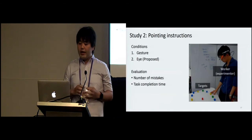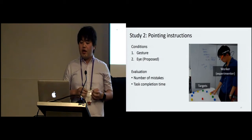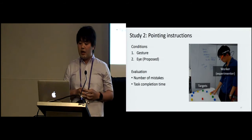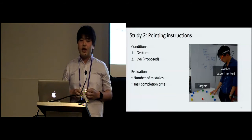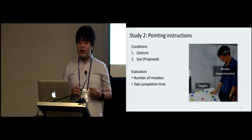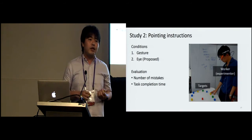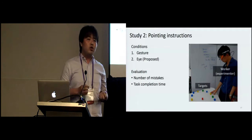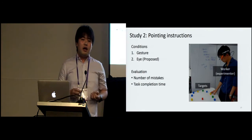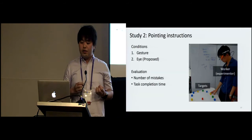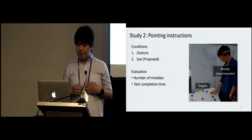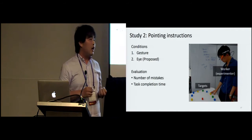The second study is an objective study to investigate pointing ability in the wearable device setting. The participants played remote collaborators and pointed out a single block to identify the object. This task was not easy because the worker could see instructions only in the narrow view field of the HMD. We compared two conditions: in the first condition, the participant used hand gesture, and in the other condition, they could use their gaze to identify objects. We evaluated the number of mistakes and task completion time.